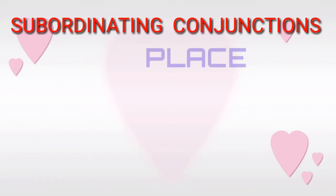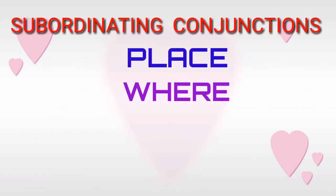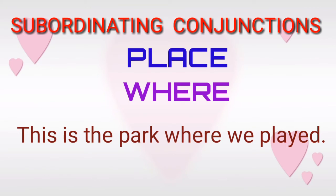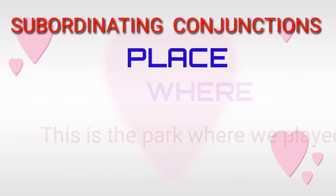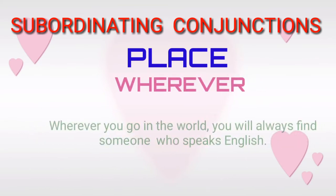Subordinating conjunctions of place — 'where.' For example: 'This is the part where we played.' Subordinating conjunctions of place — 'wherever.' For example: 'Wherever you go in the world, you will always find someone who speaks English.'